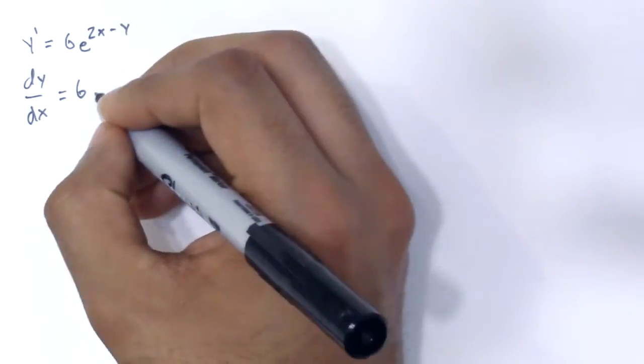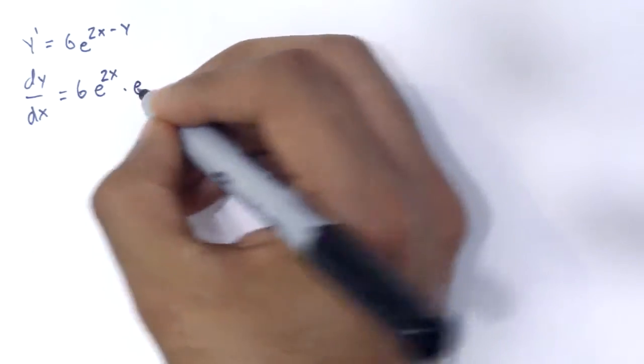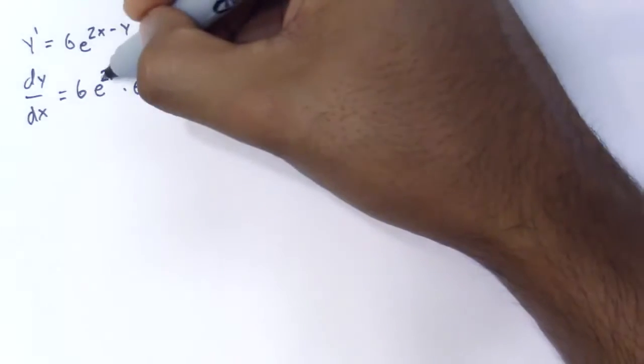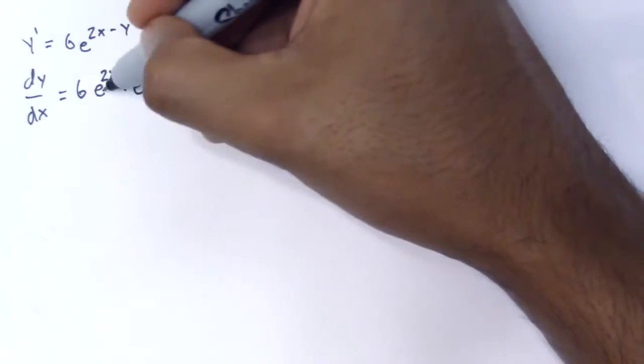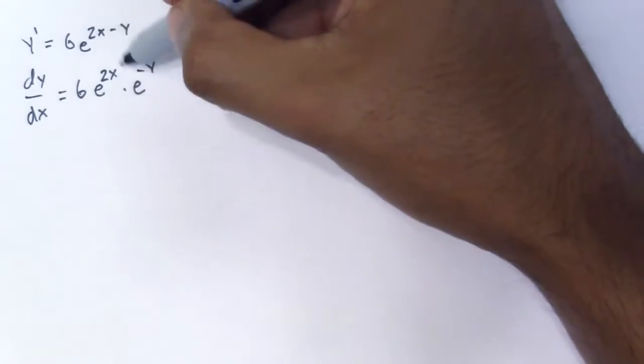what this means. So e^(2x) times e^(-y) - see, these two are the same bases. So a rule of exponents is that you can just add the exponents and have them all have the same base. So those two are equivalent. Since you see that now, we can make this...